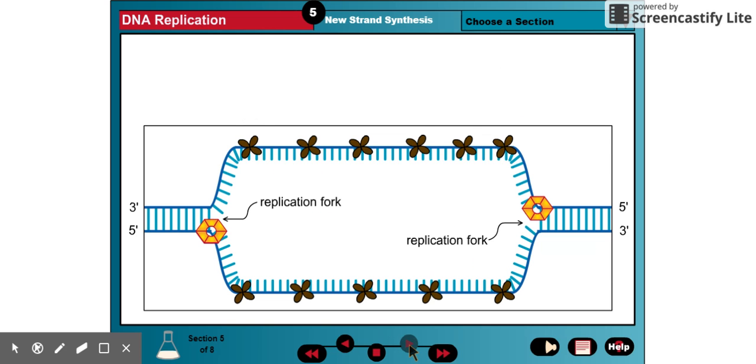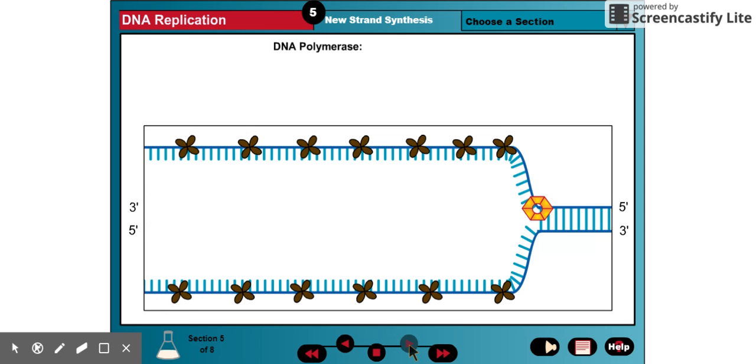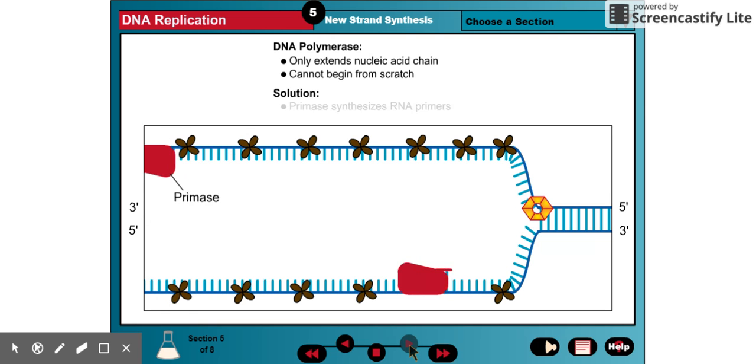Even when the strands are separated, however, DNA polymerase cannot simply begin copying the DNA. DNA polymerase can only extend a nucleic acid chain, but cannot start one from scratch. To give the DNA polymerase a place to start, an RNA polymerase called primase first copies a short stretch of the DNA strand. This creates a complementary RNA segment up to 60 nucleotides long that is called a primer.